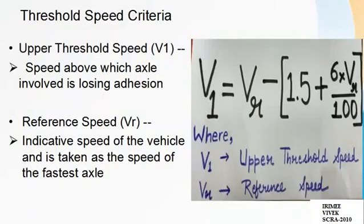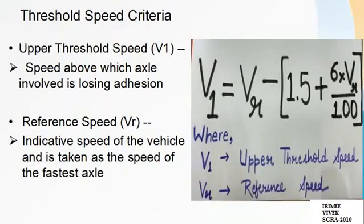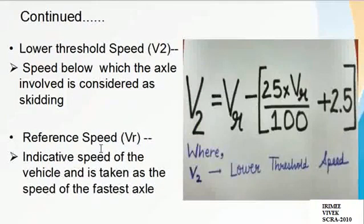The parameters in threshold speed criteria: Upper threshold speed V1 — it is the speed above which the axle involved is losing adhesion. Reference speed VR — it is the indicative speed of the vehicle and is taken as the speed of the fastest axle. Lower threshold speed V2 — it is the speed below which the axle involved is considered to be skidding.